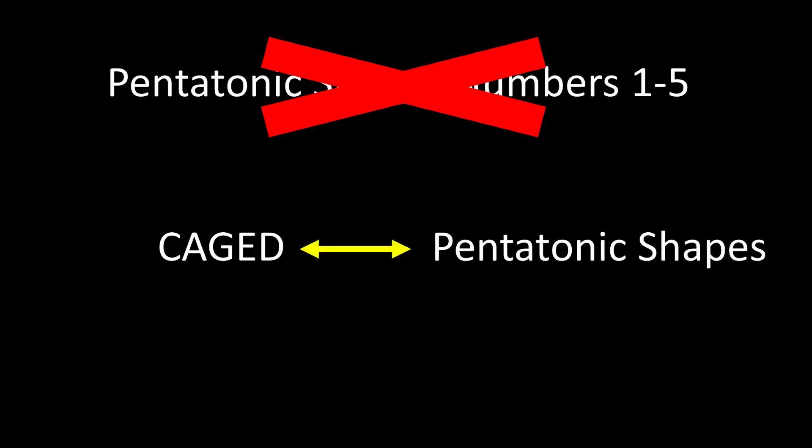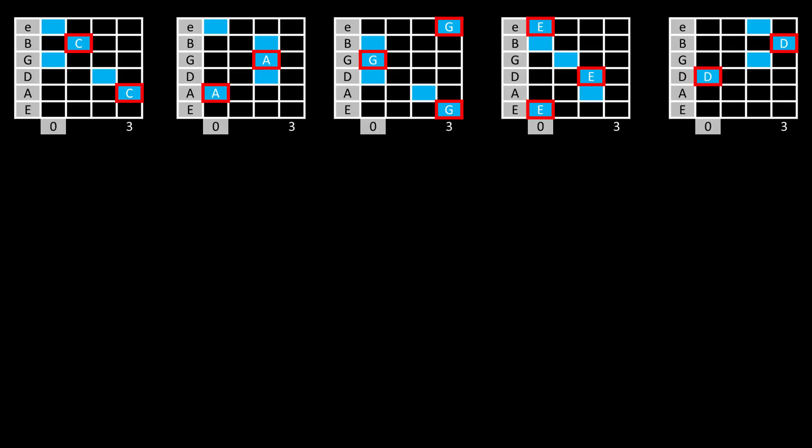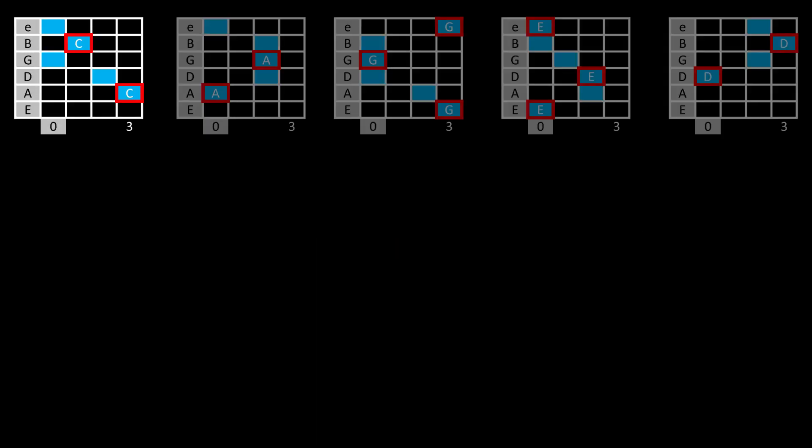We're going to relate caged to the pentatonic shapes. These are the caged open chords. C, A, G, E, D.